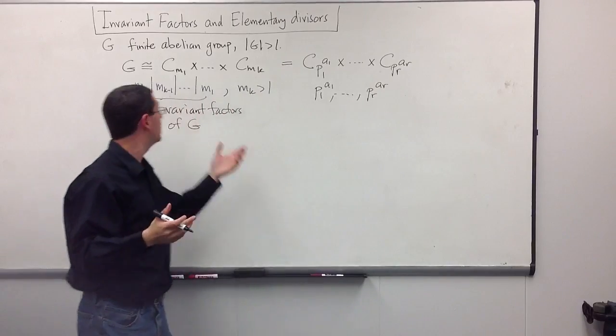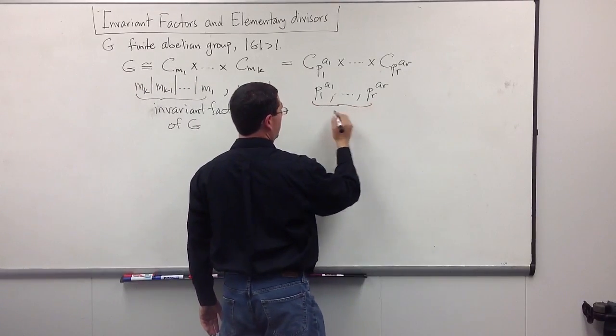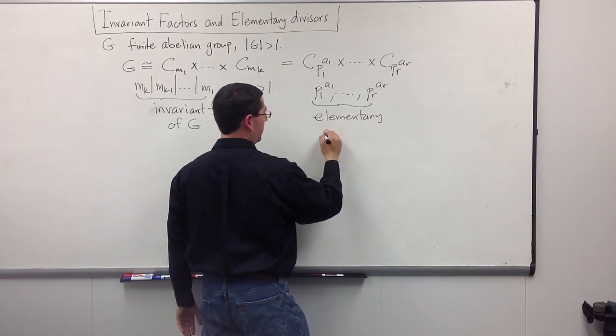going to be unique because the M1 through Mk were. And we give them a different name. These are called the elementary divisors of G.